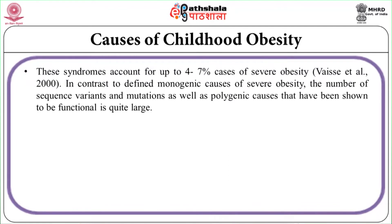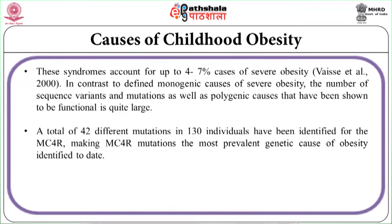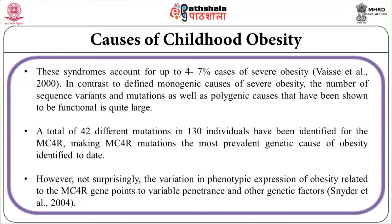In contrast to defined monogenic causes of severe obesity, the number of sequence variants and mutations, as well as polygenic causes that have been shown to be functional, is quite large. A total of 42 different mutations in 130 individuals have been identified for the MC4R, making MC4R mutation the most prevalent genetic cause of obesity identified to date. These mutations are typically associated with early onset and rather severe obesity. However, the variation in phenotypic expression of obesity related to the MC4R gene points to variable penetrance and other genetic factors (Snyder et al., 2004).